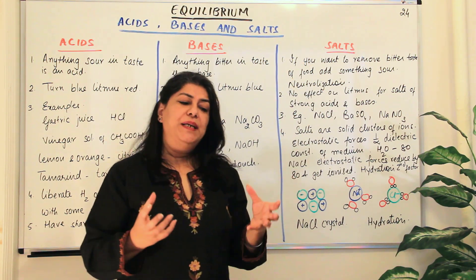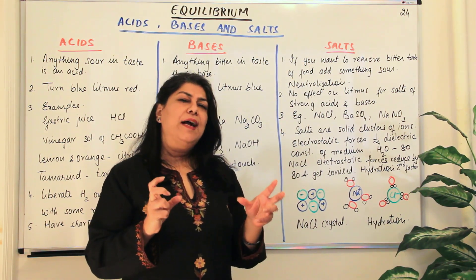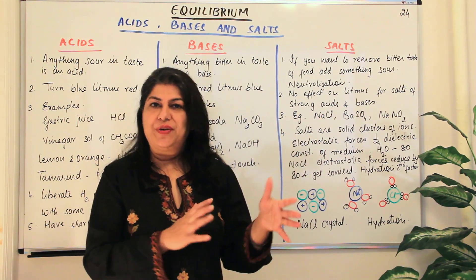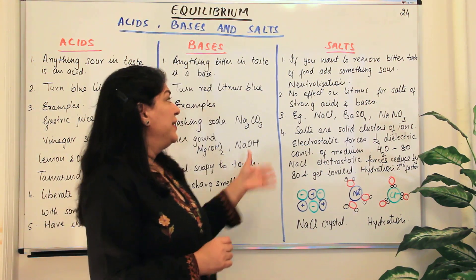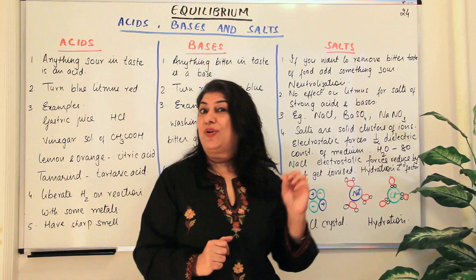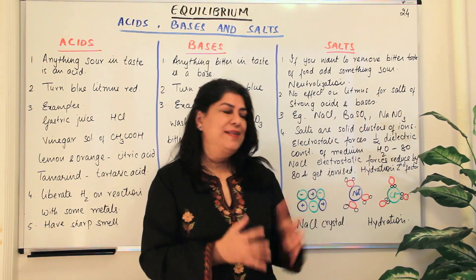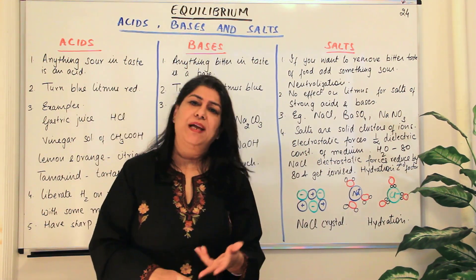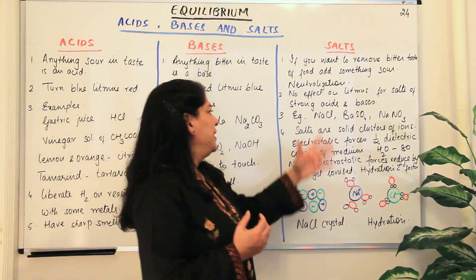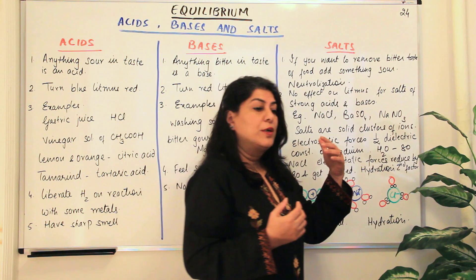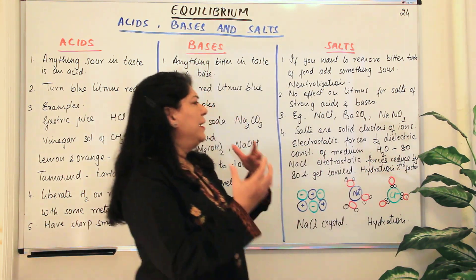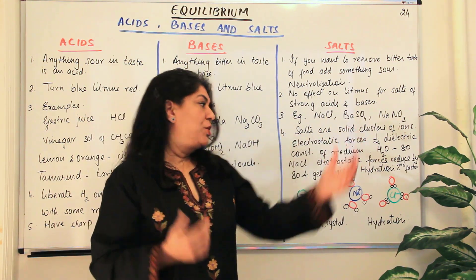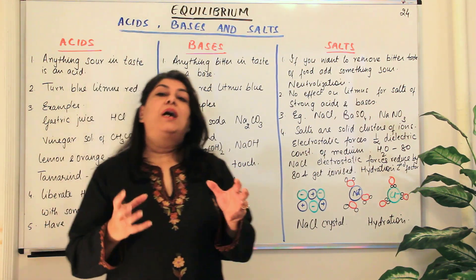Salts made up of strong acids and strong bases are usually neutral to litmus — they do not affect litmus. But if you have a salt made up of a weak acid or a weak base, that tends to affect litmus — we'll study this later. Examples of salts include sodium chloride, barium sulphate, sodium nitrate, magnesium sulphate, and chromates. Salts are clusters of ions: a positively charged ion and a negatively charged ion stay together due to electrostatic forces of attraction, and these ions form solid crystals. That is why ionic compounds or salts are usually crystalline in nature.